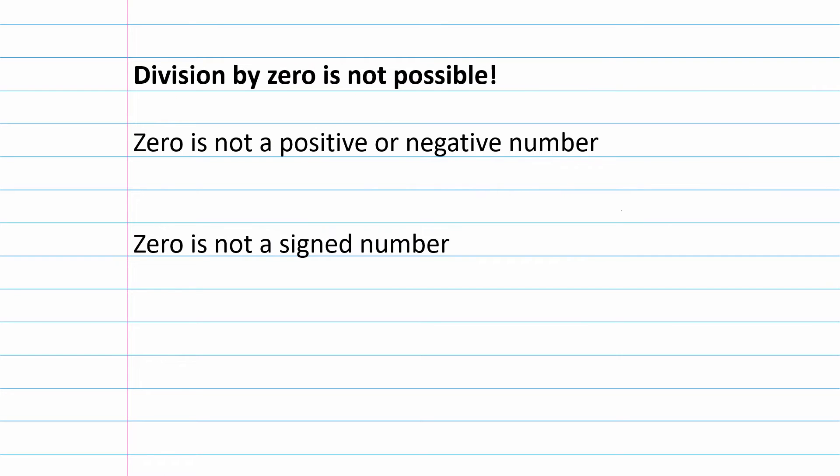Division by zero is not possible. We cannot do 5÷0—can't do it, won't work. Zero is not a positive or negative number, so this is just one of those rules we need to know. Zero is not positive and zero is not negative. Zero is not a signed number because a signed number is a positive or negative number. We cannot divide by zero.